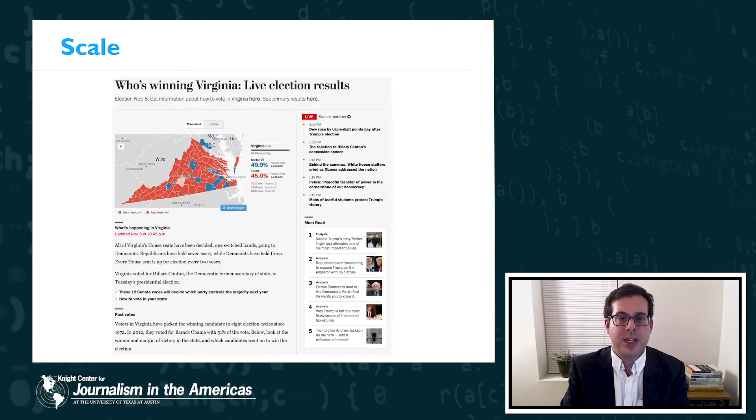Another advantage of automation is scale. In the last video I showed you this example of the Washington Post's coverage during the 2016 U.S. elections. The Washington Post was able to cover all 435 House races, all 34 Senate races, and all 12 gubernatorial races in their 2016 coverage. In the past in 2012 they'd only covered 15 percent of congressional races, but in 2016 they were able to cover 100 percent of congressional races. So given that they had data available for all of these different races, they were able to scale up their coverage to really just cover everything.